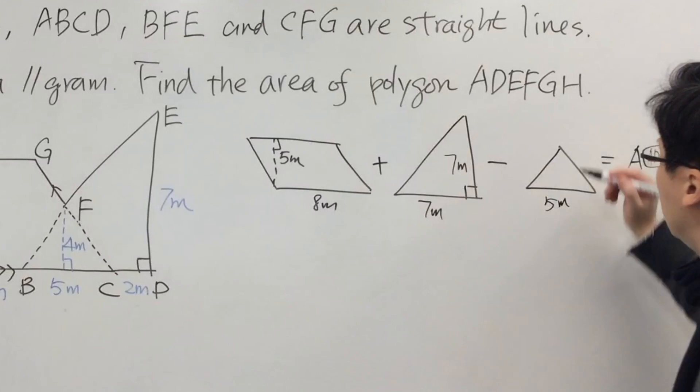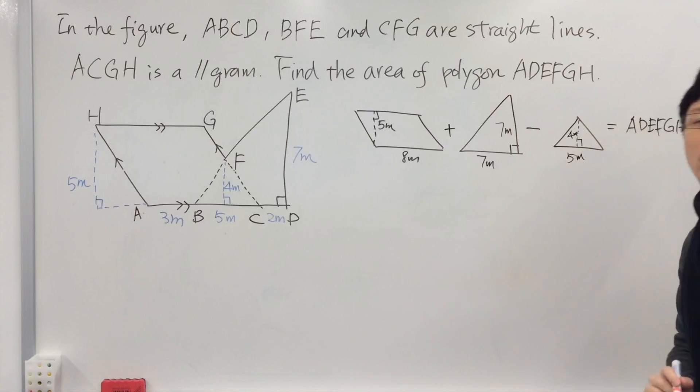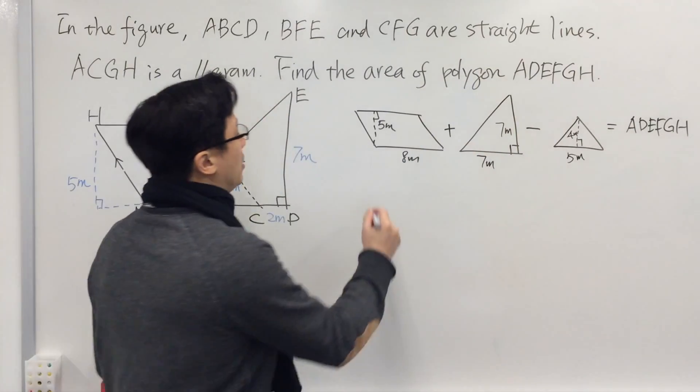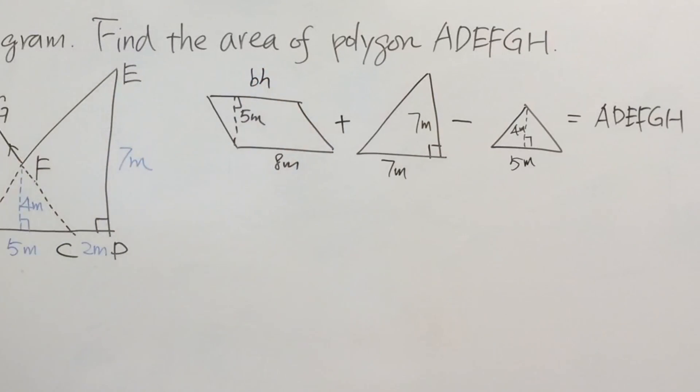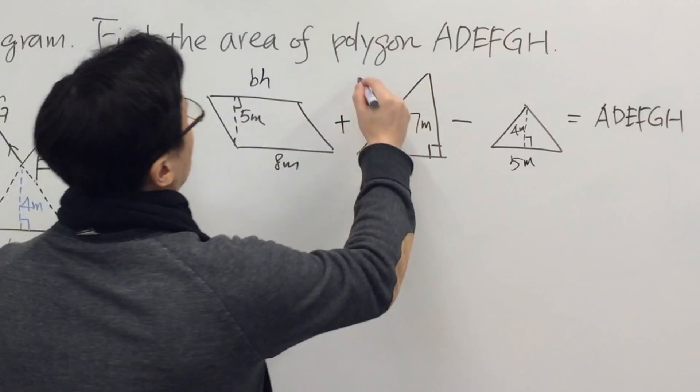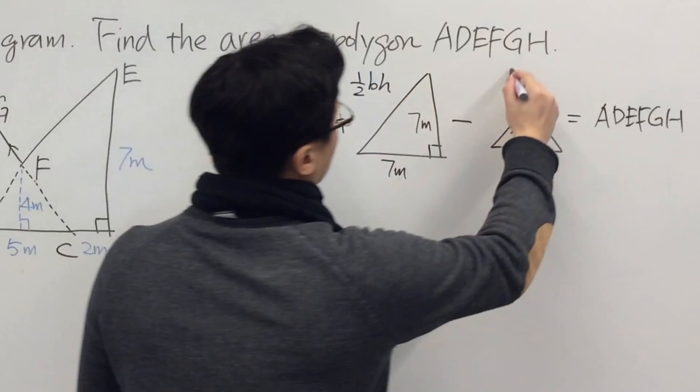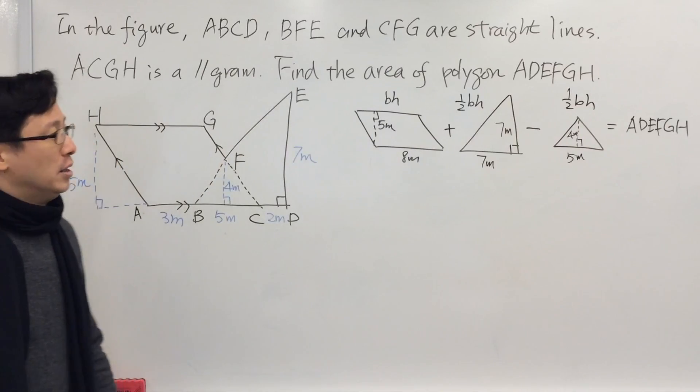Height is 4 meters. Now for the area of the parallelogram, it will be the base times the height. For a triangle, it's base times height divided by 2. This is also base times height divided by 2.